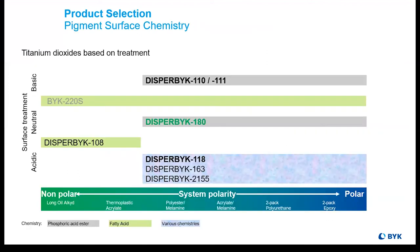But stabilization is the key, and sometimes that's even more tricky when dealing with wetting and dispersing additives for titanium dioxide, since most manufacturers of TiO2 use different surface treatments. Sometimes they're acidic, sometimes basic, sometimes neutral, and this makes the decision as to which additive to use even more difficult. One of the things that BIC has done was to introduce a product like Disperbic-118 that worked independent of the surface treatment of the titanium dioxide.